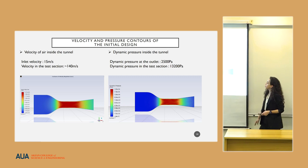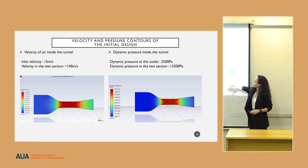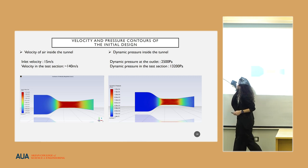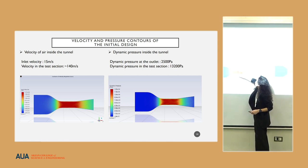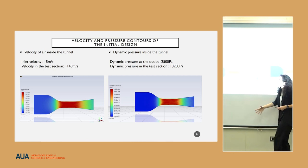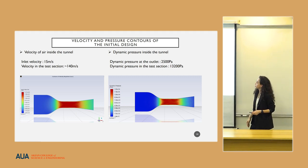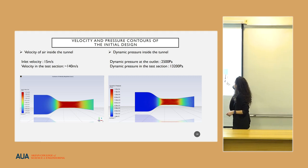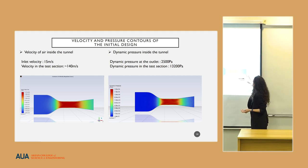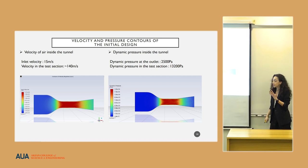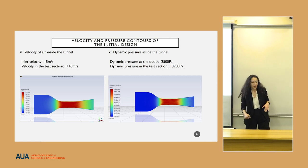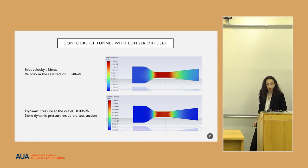Here we can see two contours, one is for velocity and the other one is for pressure. In the test section, as can be seen, we reached 140 meters per second, which is almost nine times the inlet velocity, which is 15 meters per second. In the dynamic pressure contour, we see that at the end of the diffuser, we have 2500 Pascal dynamic pressure, which is a problem.